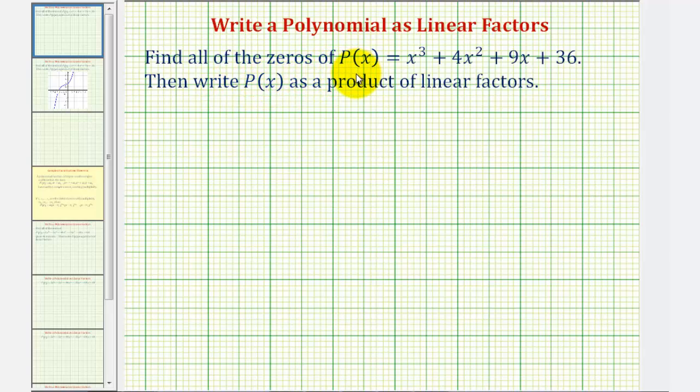We want to find all of the zeros of the degree three polynomial function and then write p(x) as a product of linear factors.